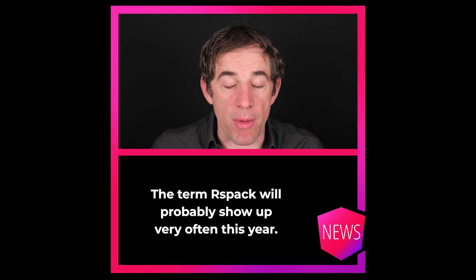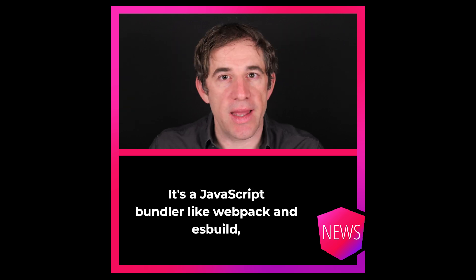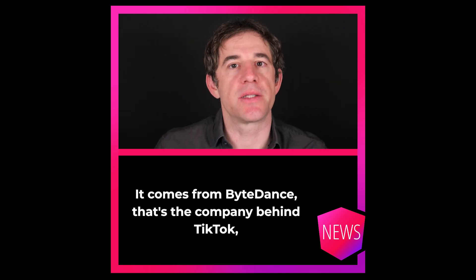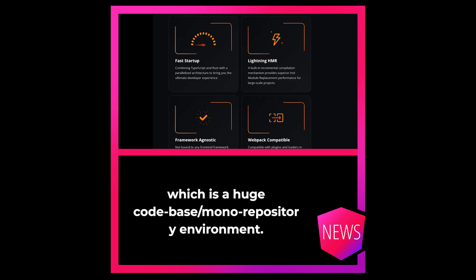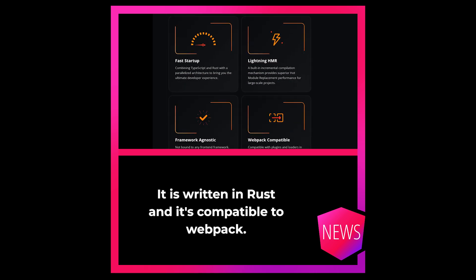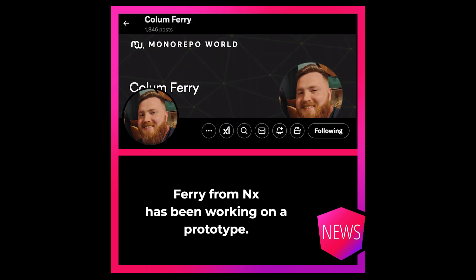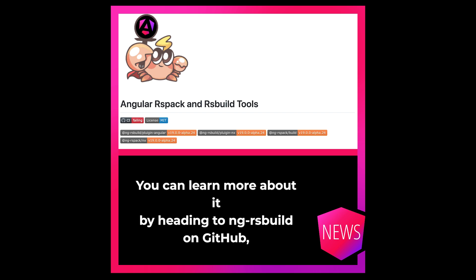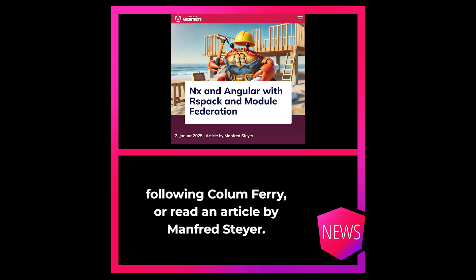The term RSPack will probably show up very often this year. It's a JavaScript bundler like Webpack, but promises better build times. It comes from ByteDance — the company behind TikTok — and it primarily solves their need, which is a huge codebase monorepo environment. It is written in Rust and is compatible with Webpack. Angular doesn't officially support it yet, but a contributor from Nx has been working on a prototype. The first version is now available and it's quite promising. You can learn more by heading to the ngrspecbuild GitHub repo, following that contributor, or reading a related article.